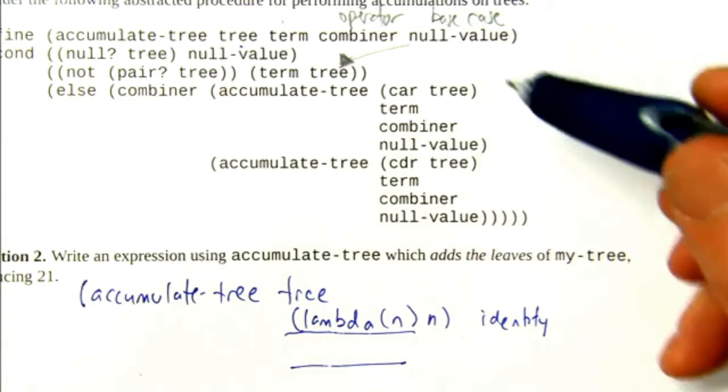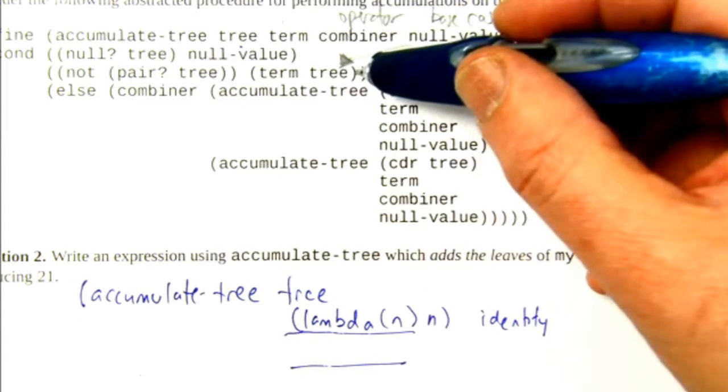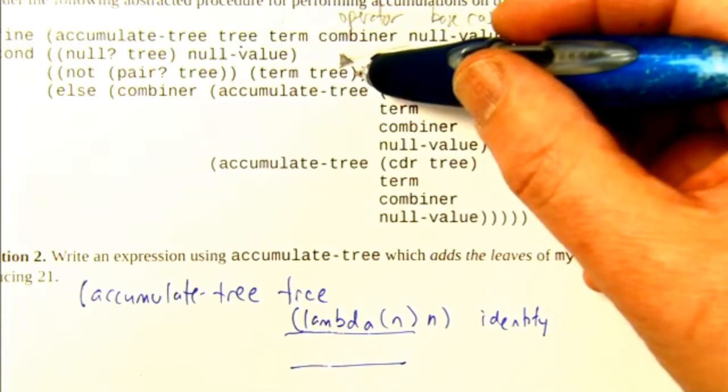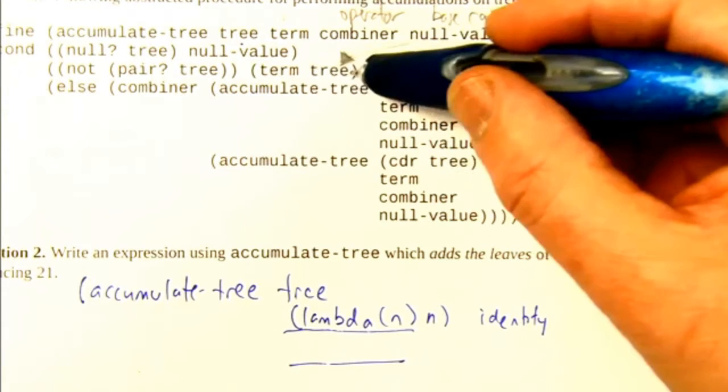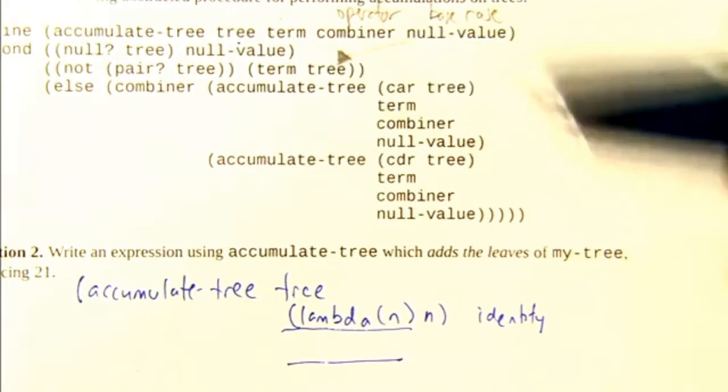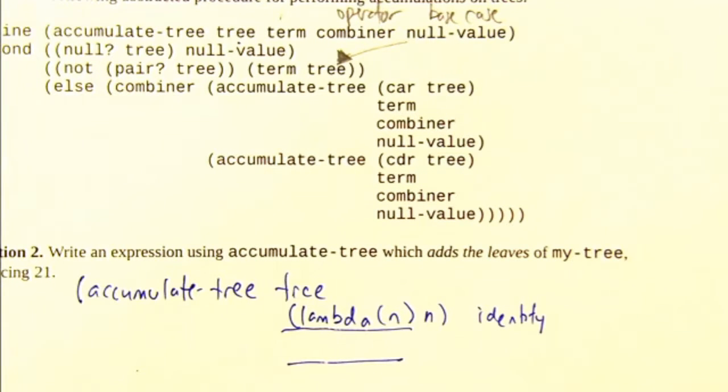So when it gets used, we'll have recursed down so that tree is not a pair, it's a number. We transform the number by returning the number. So if we said accumulate-tree of five, it would say the sum of that tree is five.